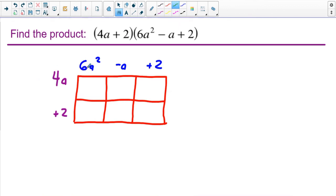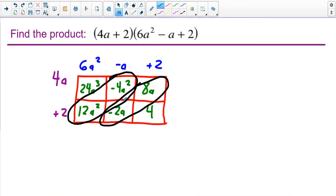4A times 6A squared, that's going to give me 24A to the third power. 2 times 6A squared, that's going to be 12A squared. 4A times negative A is negative 4A squared. 2 times negative A, that's going to be negative 2A. 4A times 2 is 8A. And then 2 times 2 is 4. Okay, so this one, definitely a little longer. And you still see kind of the same pattern here, right? Along the diagonals, I can combine these like terms. I can combine these like terms also.